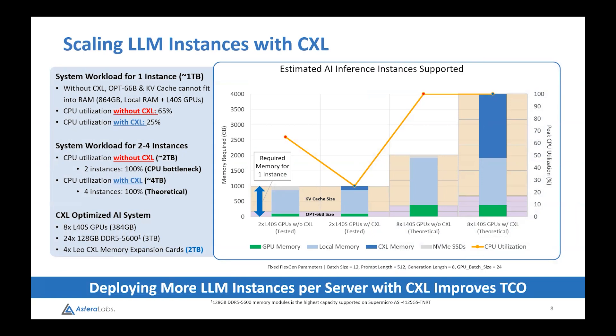What we're showing here is the memory requirement for what we tested. We have a KV cache and the OPT-66B model, which required up to approximately one terabyte of memory — an approximate number to keep the math simple. In green you can see the GPU memory was filled; the local memory was filled, with 768 gigabytes for local memory alone. Without CXL, it basically spills out onto disk. With that one instance without CXL, it uses up 65% of CPU utilization.